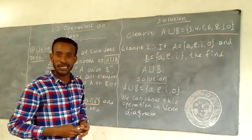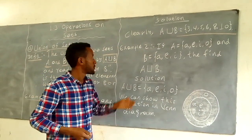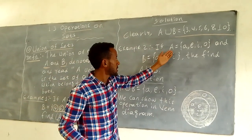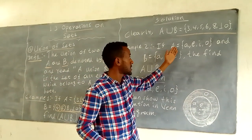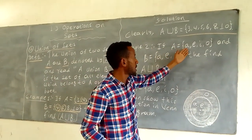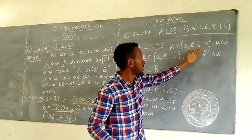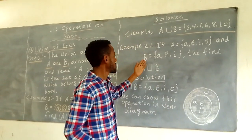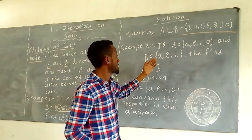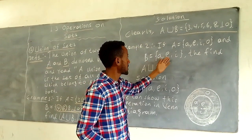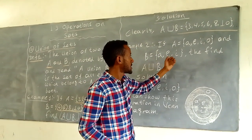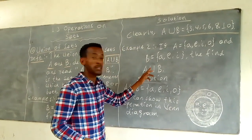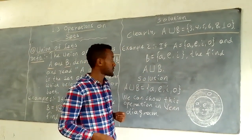Example 2: If A is equal to {A, E, I, O} and B is equal to {A, E, I}, then find A union B.